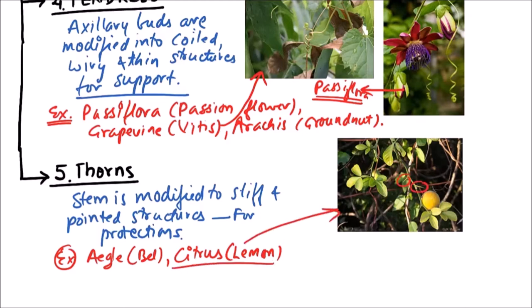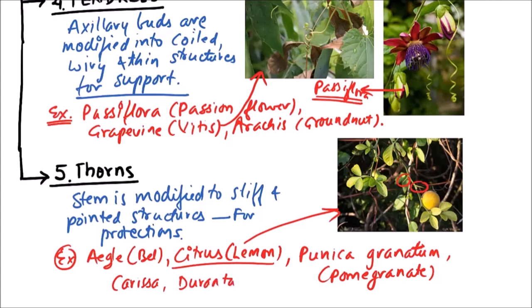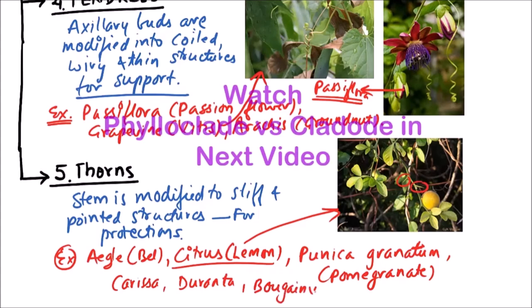These are the thorns which are modification of stem. Then Punica granatum which is pomegranate. This is Carissa carandas, then also the Bougainvillea.